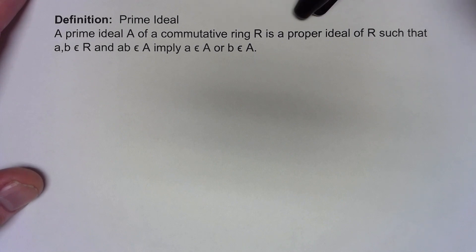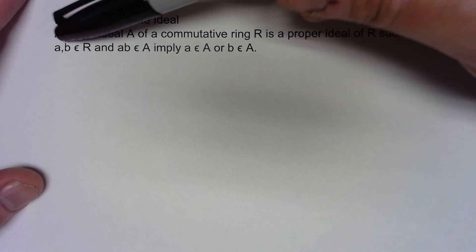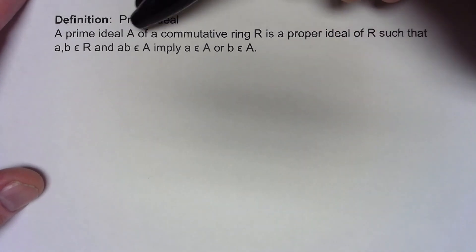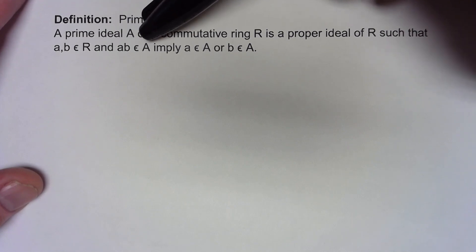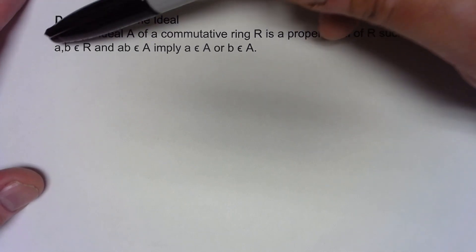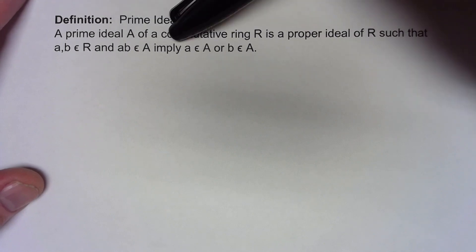First of all, it has to be a proper ideal. It can't be all of R. The whole idea is that if we take two elements of R and when we multiply them together we get something in the ideal, then one of those two elements has to be in the ideal.